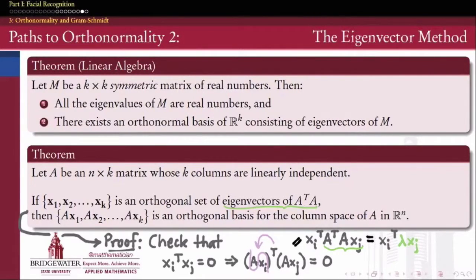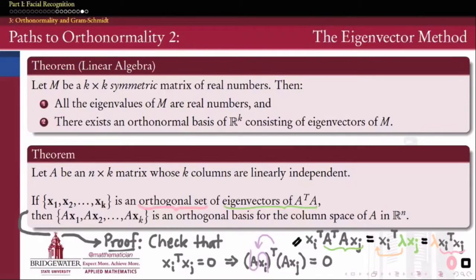Lambda here is a real number, though that's not important for this argument. Because lambda is a scalar, we can pull it to the front of our dot product to get lambda times x_i^T x_j. But because the x_i's are orthogonal, x_i^T x_j equals zero. Therefore, because the x_i's are orthogonal eigenvectors of A^T A, the Ax_i's are mutually orthogonal. And because each is in the column space of A and the columns of A are linearly independent, the Ax_i's are linearly independent — forming an orthogonal basis for the column space of A.